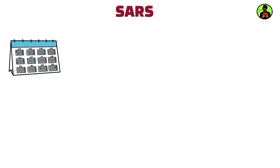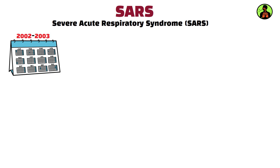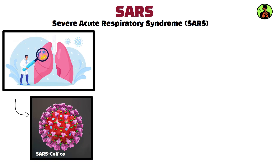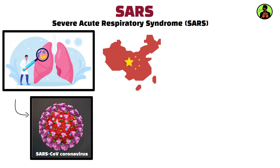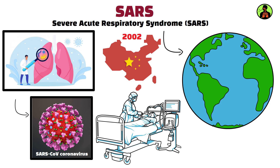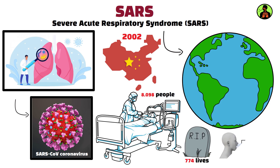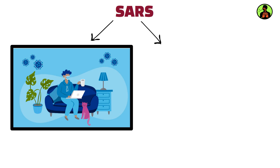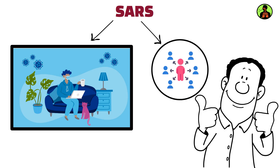SARS, 2002 to 2003. Severe Acute Respiratory Syndrome, SARS, is a viral respiratory illness caused by the SARS-CoV coronavirus. First identified in China in 2002, SARS spread to 29 countries, infecting 8,098 people and claiming 774 lives. Transmitted through respiratory droplets, SARS causes fever, cough, and severe pneumonia. Strict quarantine measures and international cooperation helped contain the outbreak by mid-2003.